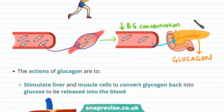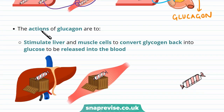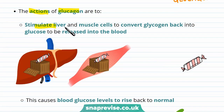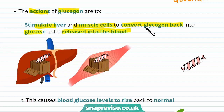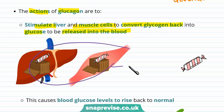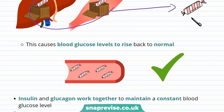So what exactly does glucagon do? The actions of glucagon are to stimulate the liver and muscle cells to convert glycogen back into glucose, to be released into the blood. So glycogen in the liver and muscle cells is converted back into glucose, and this causes blood glucose levels to rise back to normal.